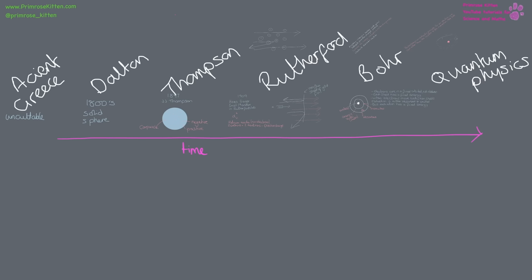The model of the atom has changed a lot over time because of new developments and discoveries. From ancient Greece, where they developed the word atom meaning uncuttable, to Dalton where it was a solid sphere. Then JJ Thomson, who discovered electrons, gave us the plum pudding model — a positive sphere with negative bits dotted through it. Rutherford did the gold foil experiment and worked out there was a solid centre. Chadwick added neutrons, and Bohr developed the nuclear model we use today — with a positive centre called the nucleus and electrons orbiting outside.